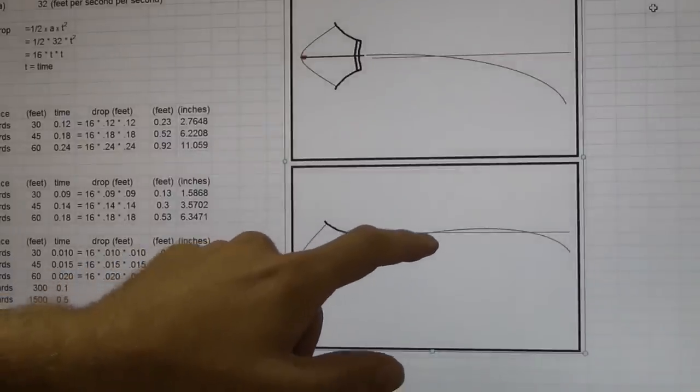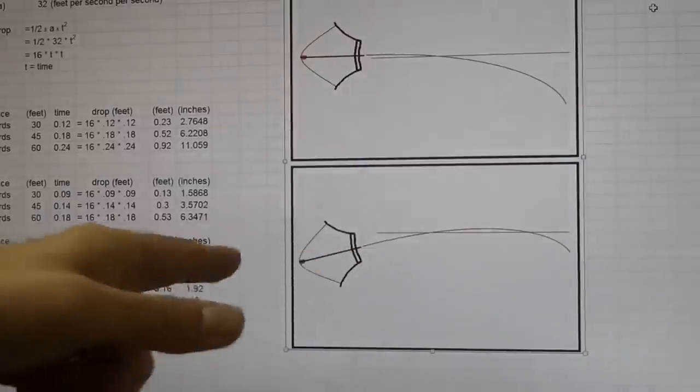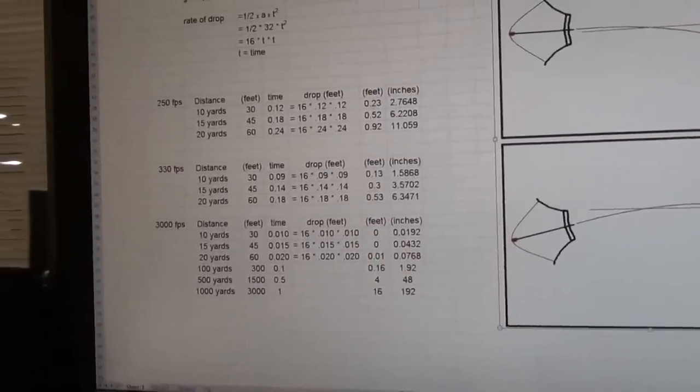So it's conceivable you could have the crossover here at 10 yards and crossover here at 20 yards. It's conceivable, but it just doesn't make sense. Now, I know, Lambdog, you were saying, well, maybe the speed makes a difference.